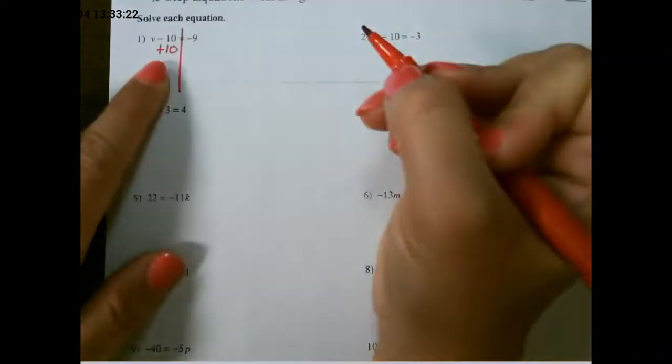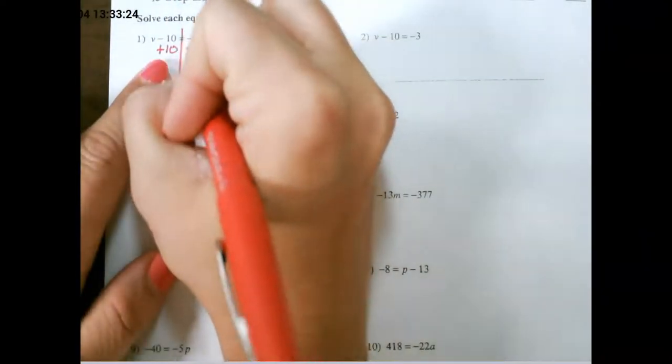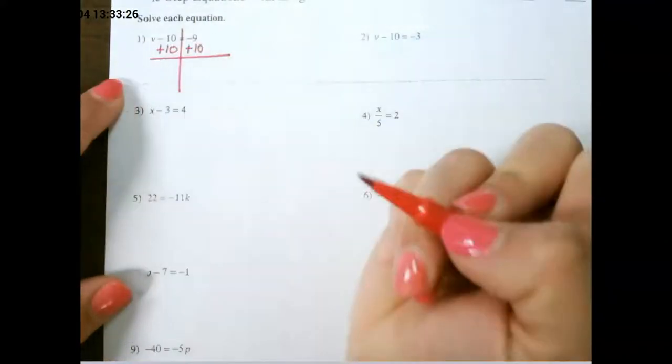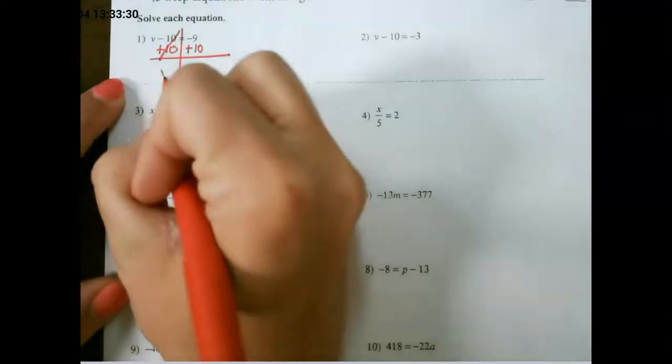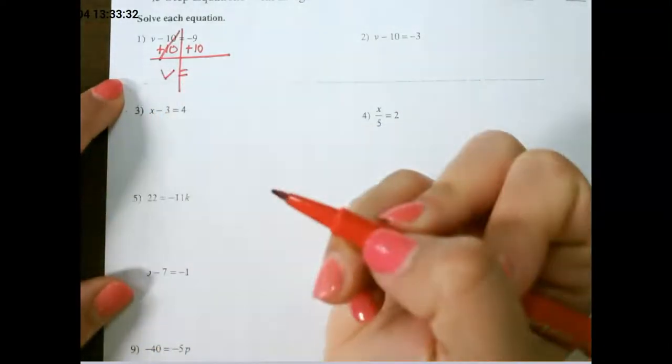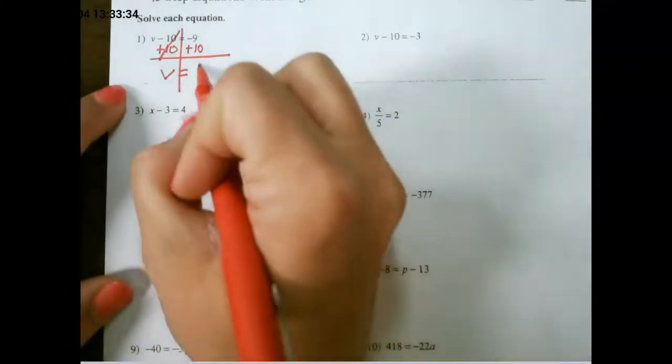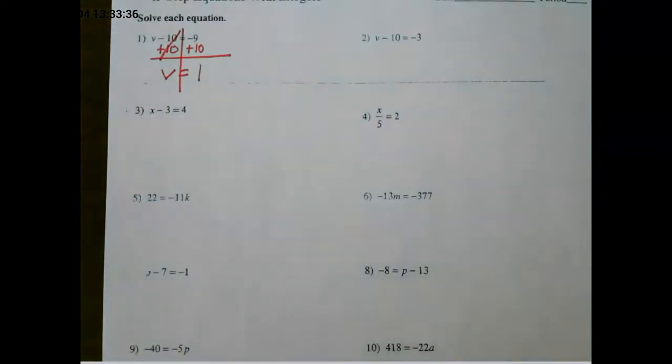If I do it to one side I have to do it to the other. Negative 10 and positive 10 cancels out, and v equals negative 9 plus 10 would give me positive 1.